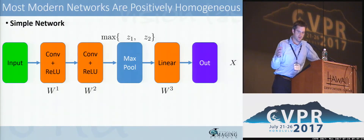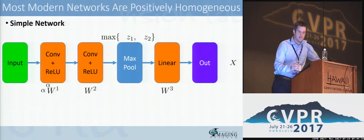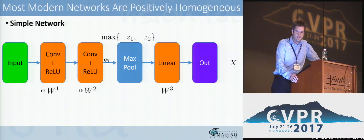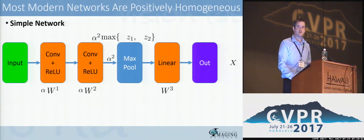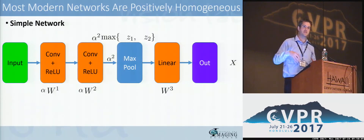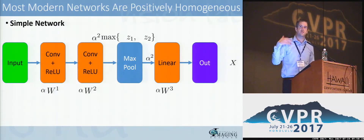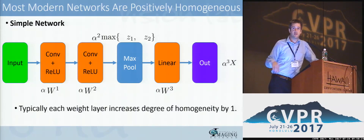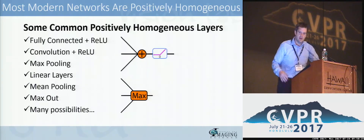In a simple architecture with convolutional layers with ReLUs, max pooling, and linear units: scaling the first convolutional layer's parameters scales that layer's output by alpha. Scaling the second convolutional layer's weights scales output by alpha again — but since the input was also scaled by alpha, these multiply and you end up scaling the output by alpha squared. This passes into max pooling, and we can move alpha squared outside the max function without changing the ordering of variables. Scaling the linear layer's weights again multiplies the alphas, giving a network that's overall positively homogeneous with degree three. Typically, each weight layer increases the degree of positive homogeneity by one. Many neural network layer types are positively homogeneous, though sigmoids and arctangents are not.